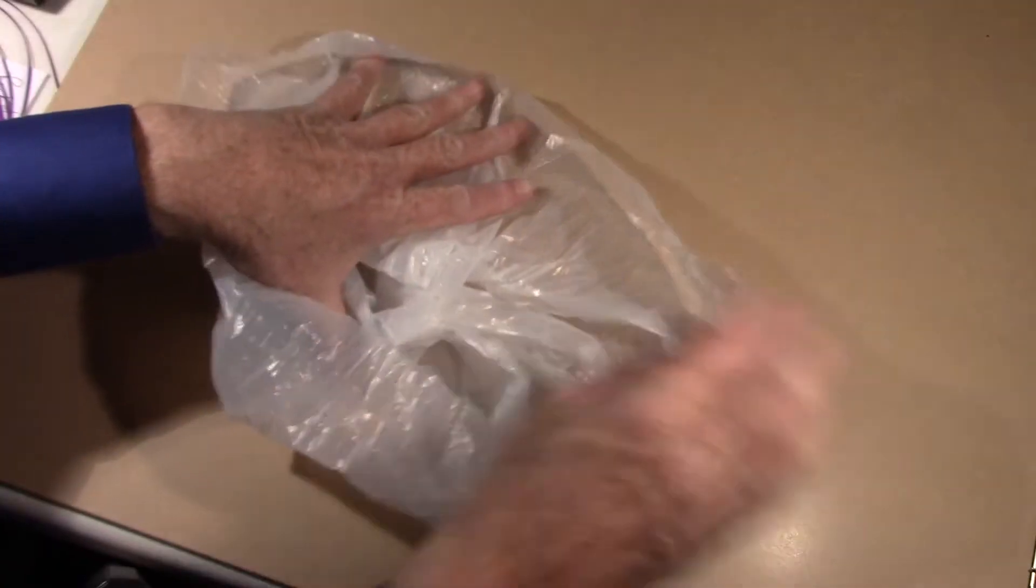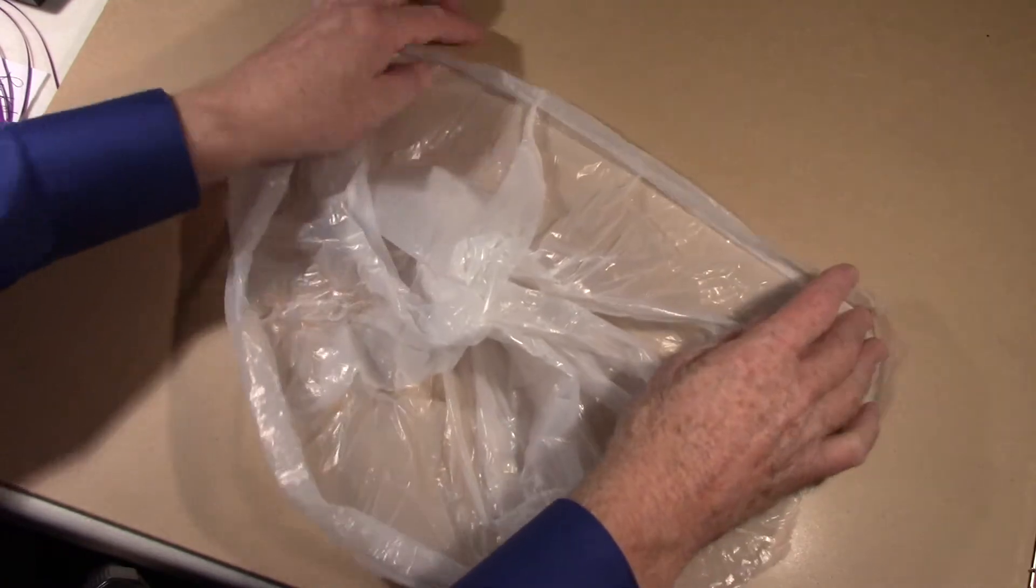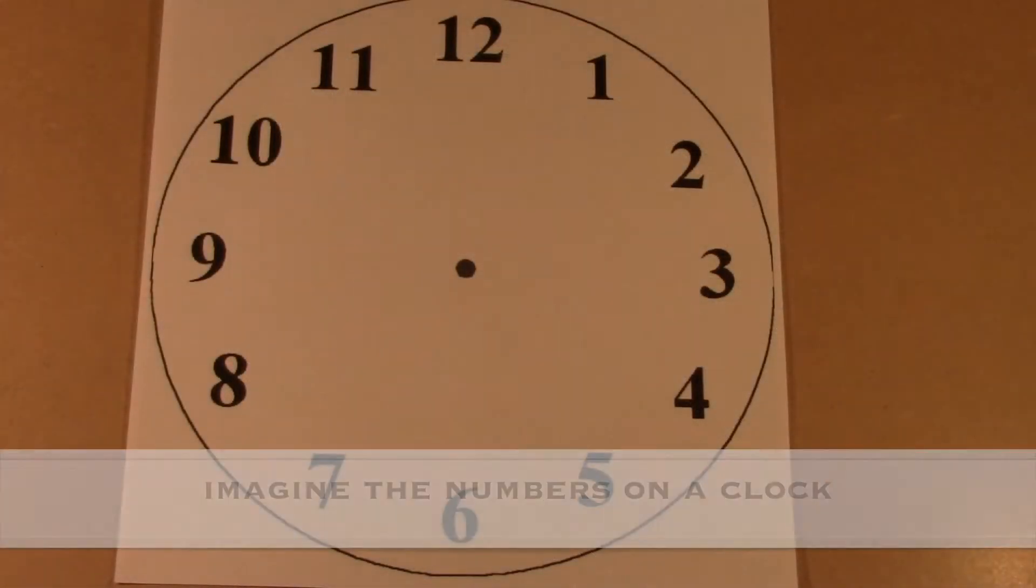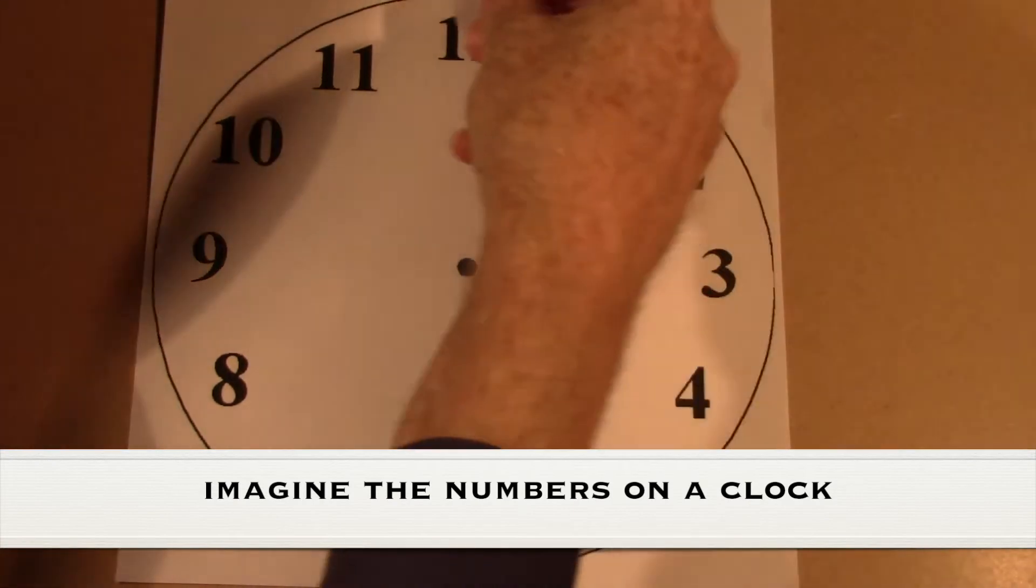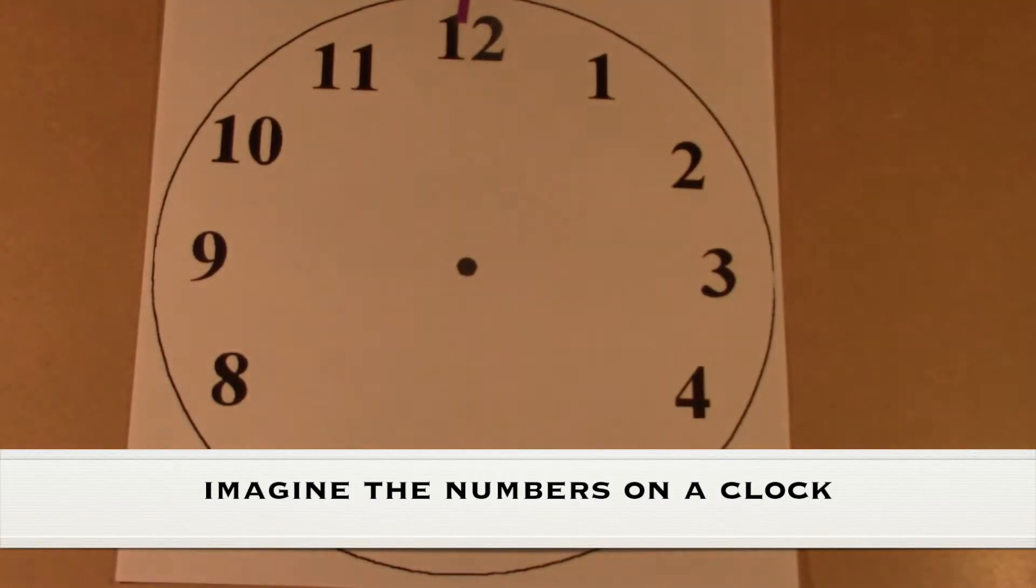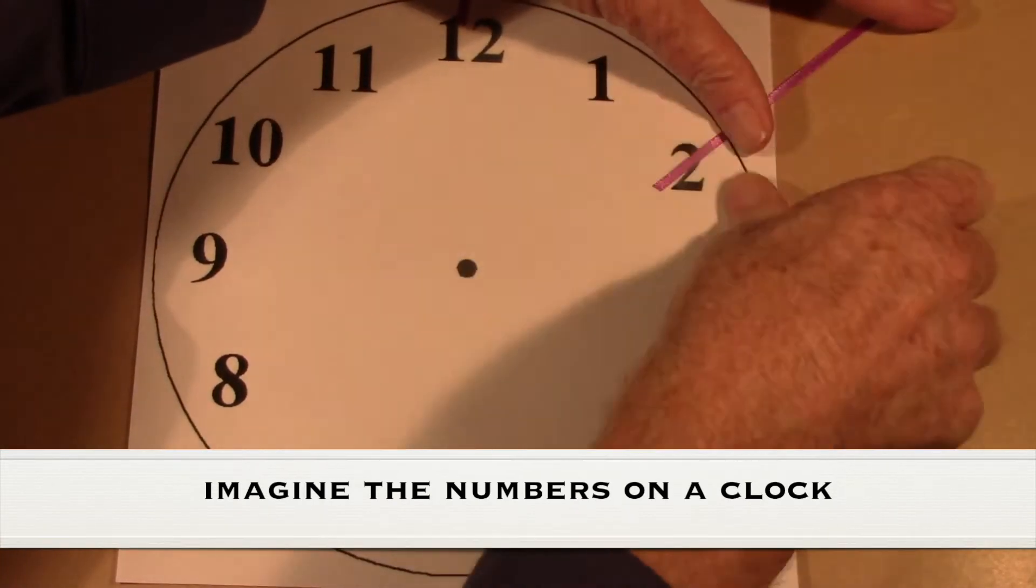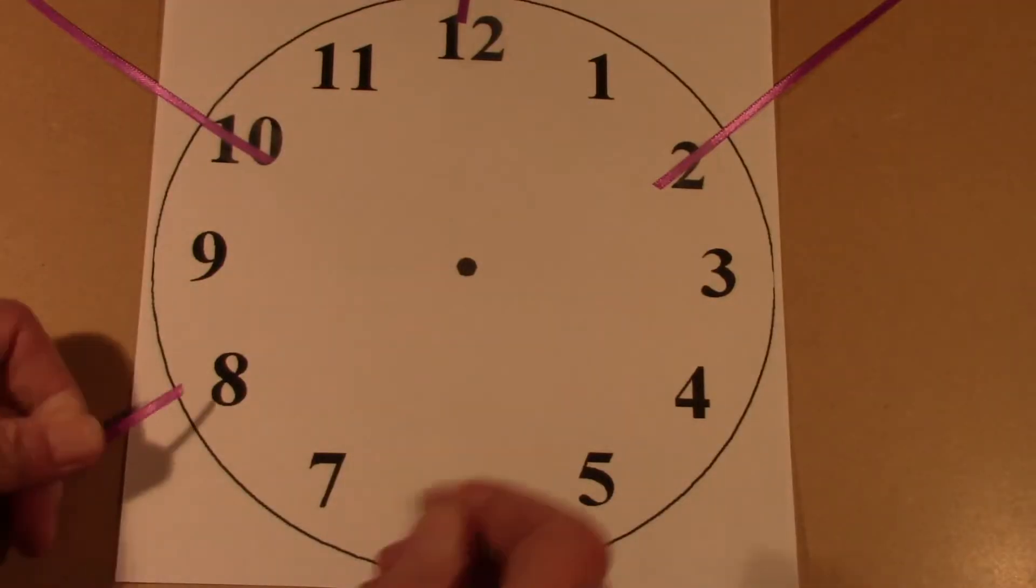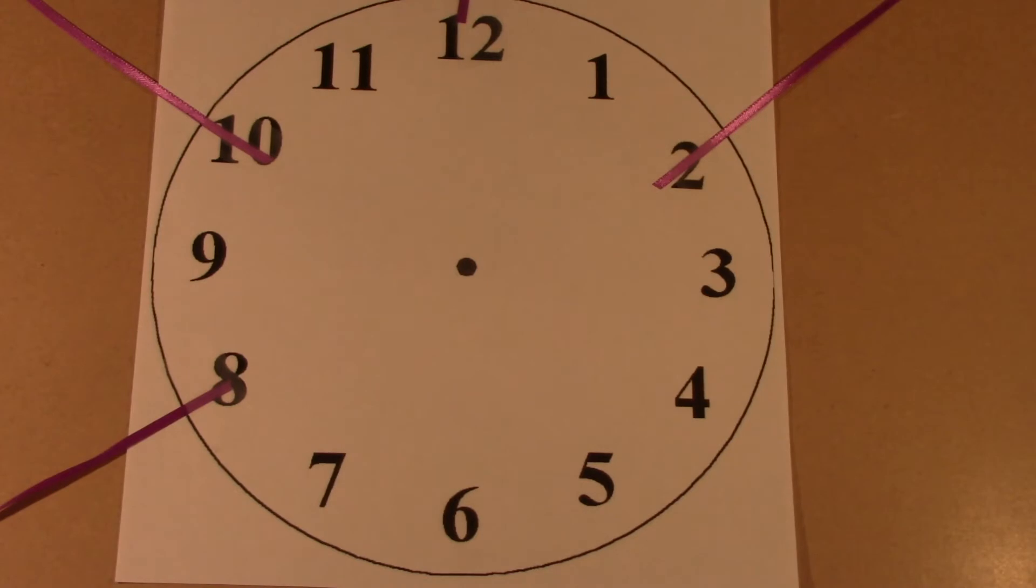Now I want you to take the parachute and turn it upside down and try to spread it out as evenly as you can into kind of a large circle. Now imagine a clock face. Because when you put the ribbons on, it's going to be at different numbers around the clock. You'll have one at noon, that's the 12 o'clock hour at the top, one at 2 o'clock, one at 10 o'clock, one at 8, one at 4, and the last one at 6.